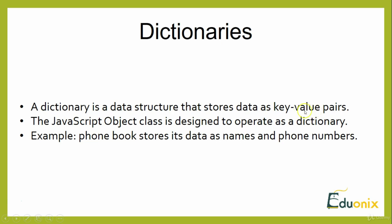Whatever key-value pairs we have in our database are stored in the format of a dictionary, and that is why it is said to be a unique kind of data structure. The key-value pair is stored in a way similar to how we store data in a phone book, which includes names and phone numbers. When you look for a phone number, you first search for the name, and the phone number is found right next to it.